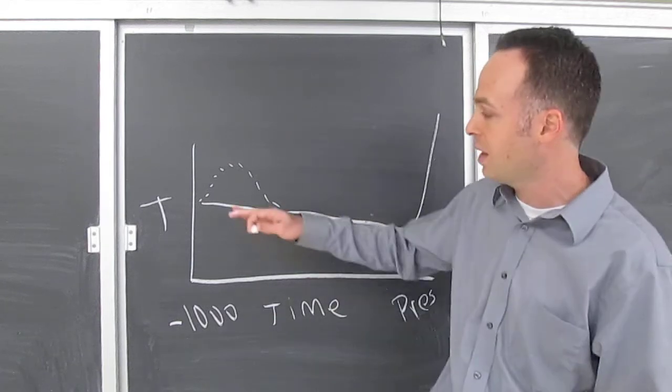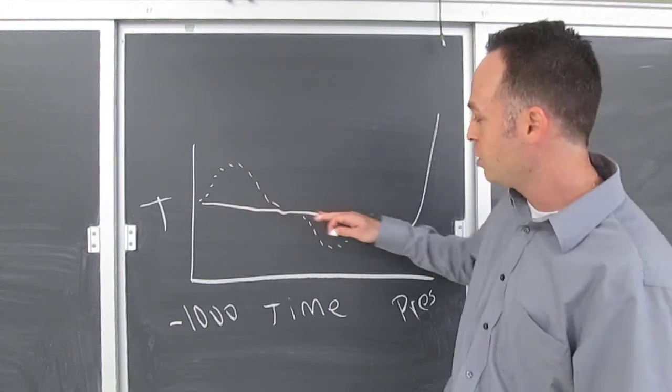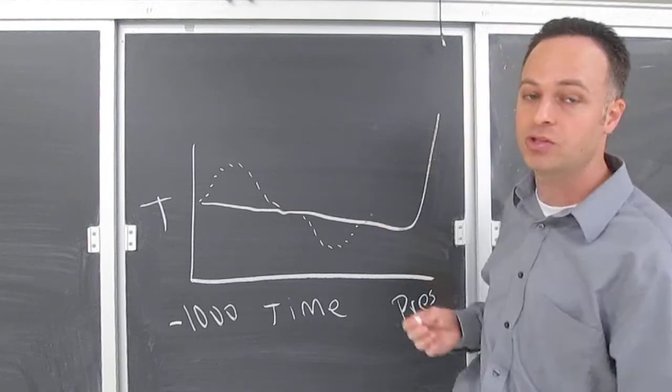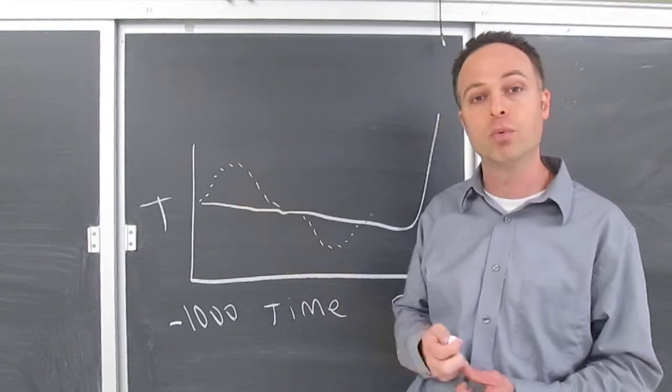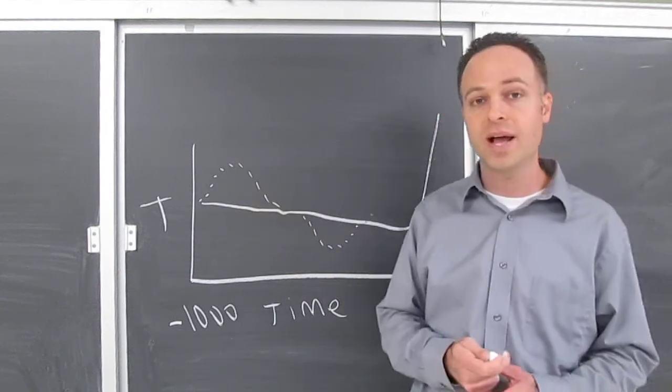In fact, it makes it look like climate was very, very stable. And then humans come along and wham! Temperatures skyrocket. So you can see why this is so controversial. It leaves out the medieval warming period and also the Little Ice Age.